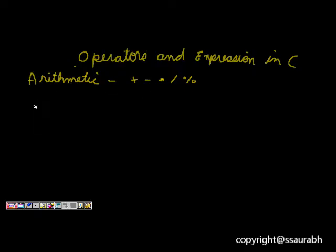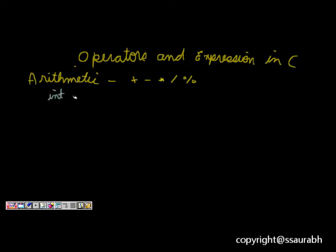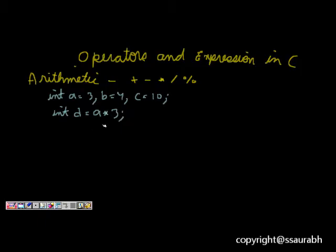We can write something like: int a = 3, b = 4, c = 10. Then we can do int d = a * 3. We can also do b + c, b / c, and all other operations. So plus, minus, asterisk — these are all operators.